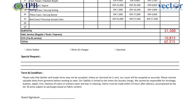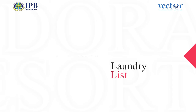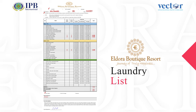We also need to take a note about the guest's requests, like shirt folded, on hanger, starch, or any other special requests. Most importantly, you need to have the guest's signature that indicates the guest has confirmed their laundry details. Once the laundry list is complete, we are ready to post it in the guest account on the system.